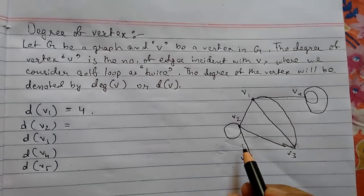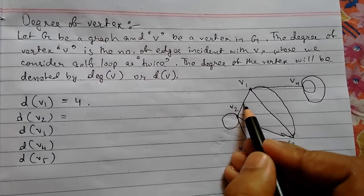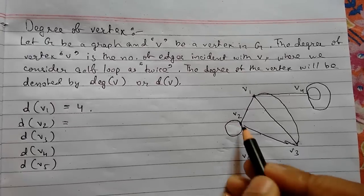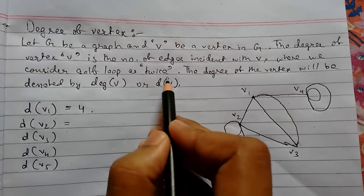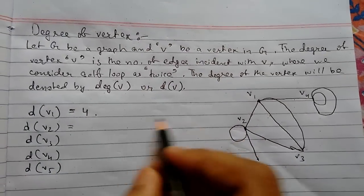Now for V2. So for V2, this is 1, 2, 3 and for self loop it has to be counted as twice. So 3 plus 2, this will be 5.